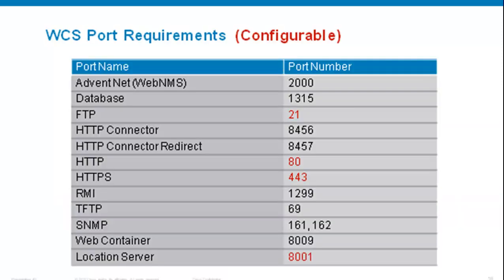Let's go through all the port requirements for WCS so you're able to start your software properly. You will see two colors for the port numbers: black and red. Those that are in red are the ones you may be able to change and configure, and the black ones are the standard ones which need to be open so WCS can start properly.